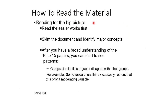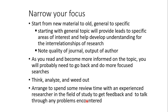When reading the material, start with the big picture — start with the easier works first, then skim documents and identify major concepts. After you have a broad understanding of 10 to 15 papers, you start seeing a pattern. There would be a group of scientists who agree or disagree with a particular process — for example, some researchers think X causes Y, whereas others say X is only a moderating variable. You have to start broadly, then narrow down into 10 to 15 papers and further aspects.